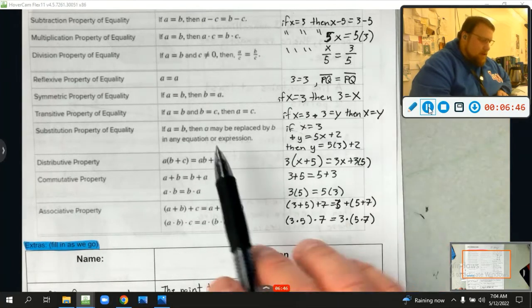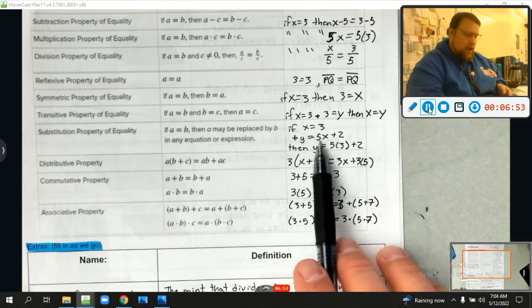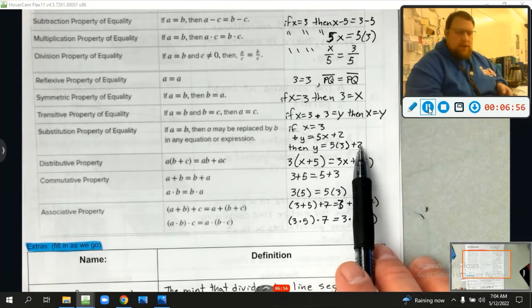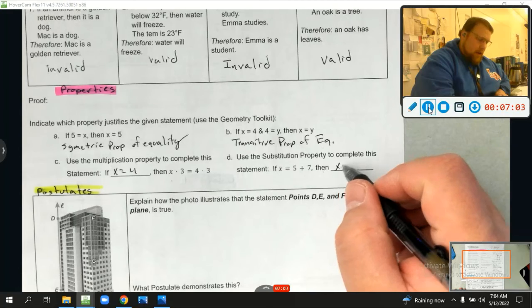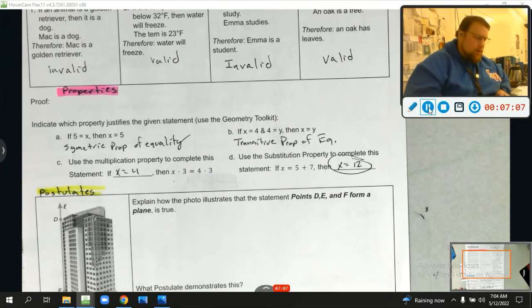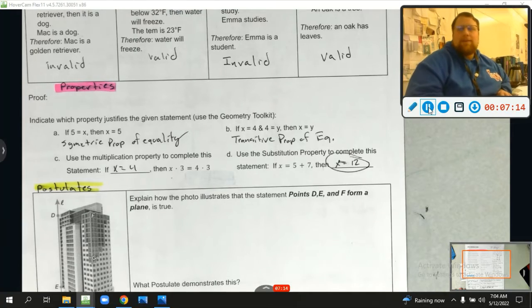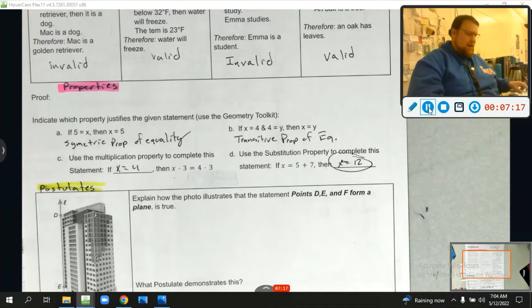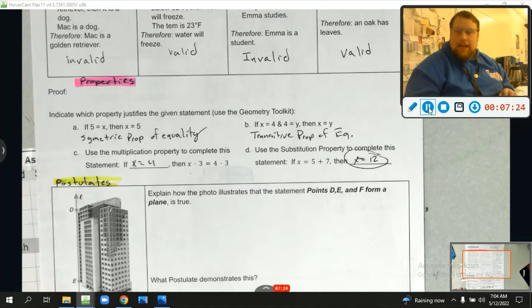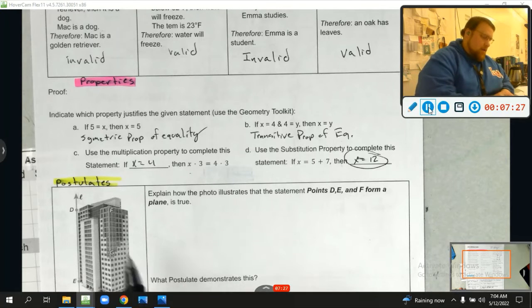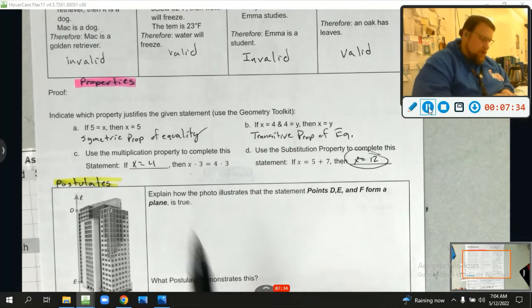I actually think this is the substitution property. If a equals b, then a may be replaced by b in any equation or expression, which you see right here. If x equals 3 and y equals 5x plus 2, then y equals 5 times 3 plus 2. It's a little different, but we're going to make that logical leap. So, if x equals 5 plus 7, then what else does x equal? x equals 12 when we solve it. So, we're using right there the substitution. Oh, I didn't even read it. Use the substitution property to complete this. Duh. I need to pay attention to my own documents, don't I? All right. I like to leave these things in here because then you learn sometimes I don't read all the directions either, and I need to. It hurts me when I don't. All right.